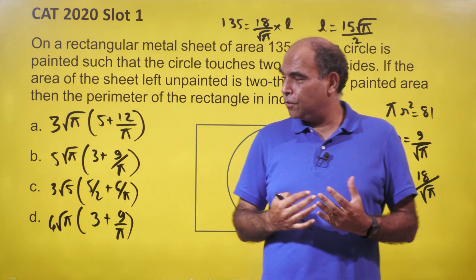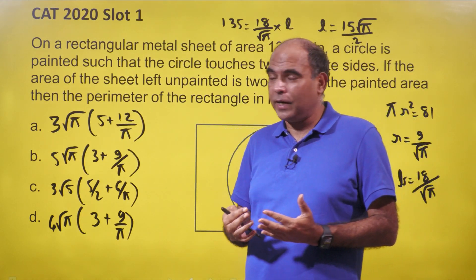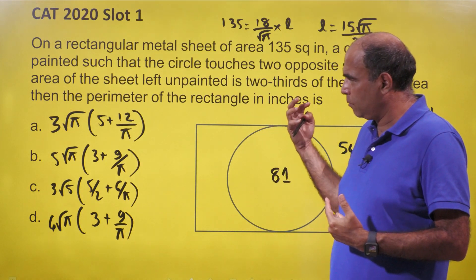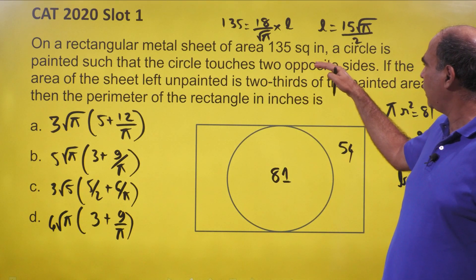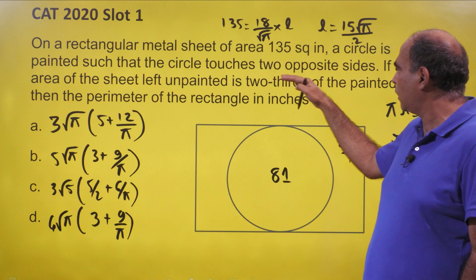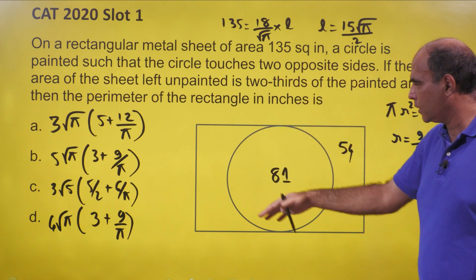Hey guys, welcome back to the 60 Second Solution Series. CAT questions simplified. CAT 2020 Slot 1, mensuration question. Rectangular metal sheet of area 135 square inches. A circle is painted such that the circle touches two opposite sides.